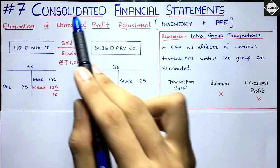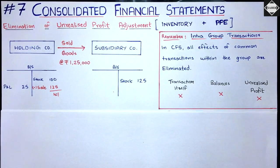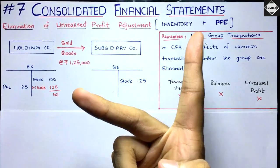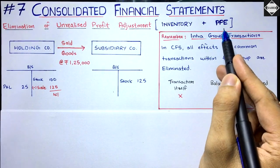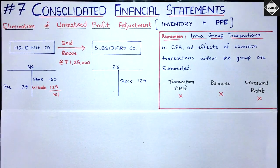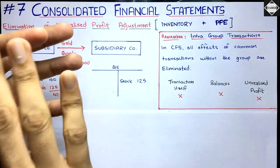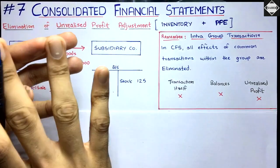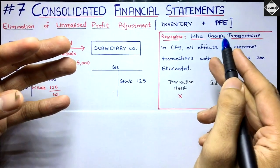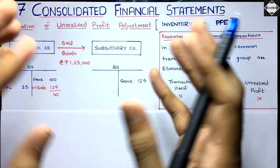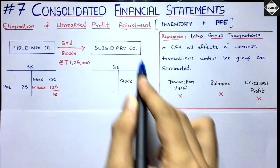We'll also look at what we have to do about it in consolidated financial statements. The first thing you need to know is that unrealized profit can exist in two things: it can exist in inventory as well as property, plant and equipment. So we are going to break this video into two parts — first unrealized profit in inventory, then PPE.